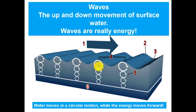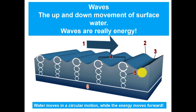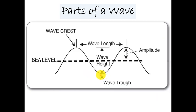Looking at the wave structure: the numbers one through five show the circular motion. Number four is the crest, the top of the wave, and number three is the trough, the bottom of the wave. The sea level is when the ocean is calm with no movement. The amplitude is the height from the sea level to the crest or trough.